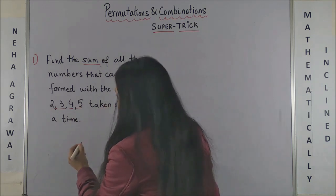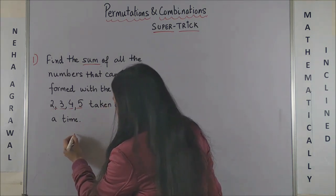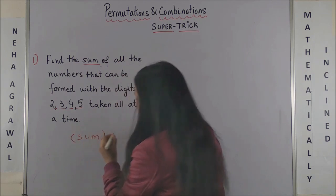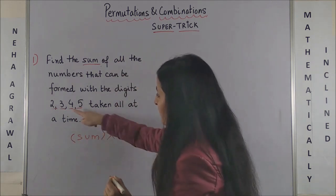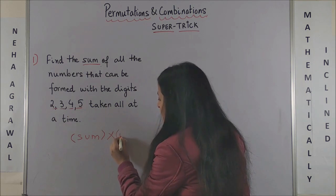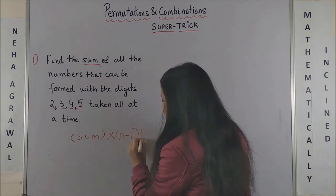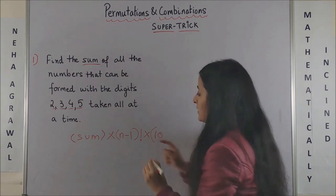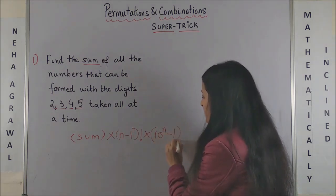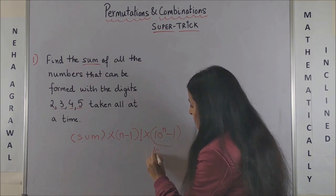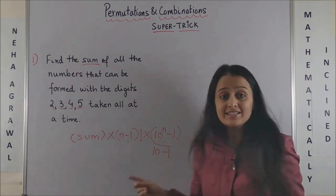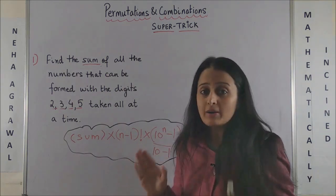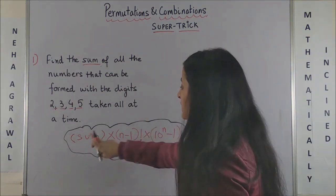In this case, the answer is: you sum up all the digits which are there, into n minus 1 factorial, into 10 raised to power n minus 1, upon 10 minus 1. It's this simple formula.